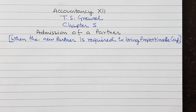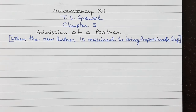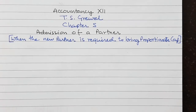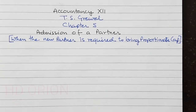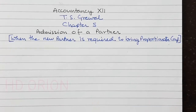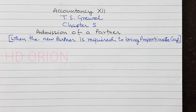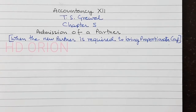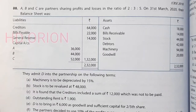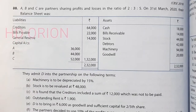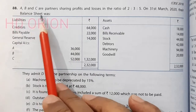Hello everyone, welcome to my channel HD Orion. We are studying accounting for partnership firms for class 12. The book is TS Grewal, Chapter 5: Admission of a Partner. We will discuss when the new partner is required to bring proportionate capital. Let us see some numericals from the textbook — Question Number 88.